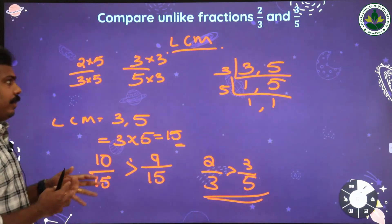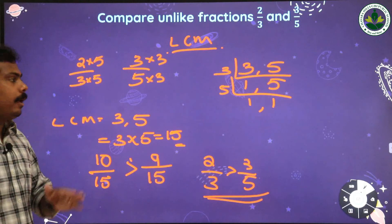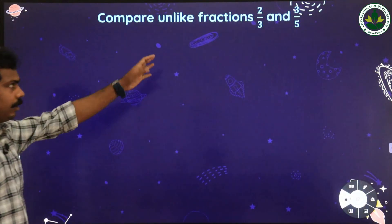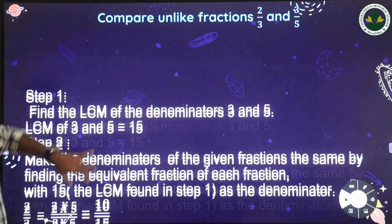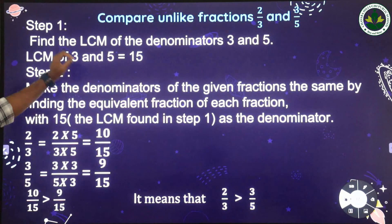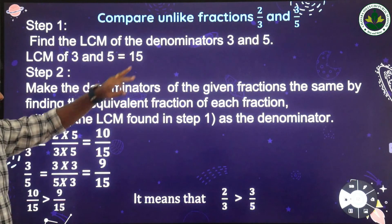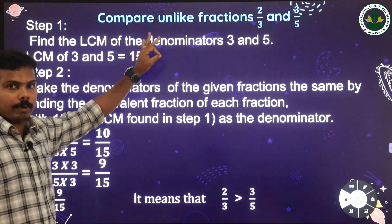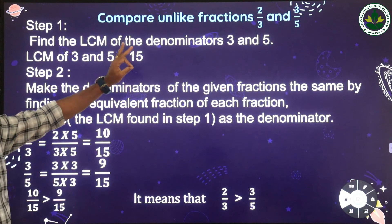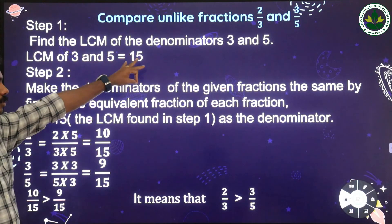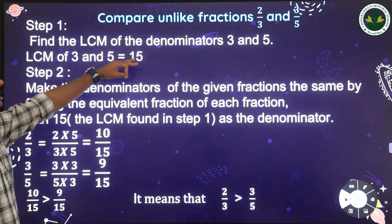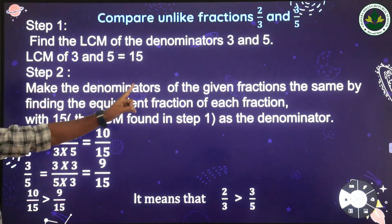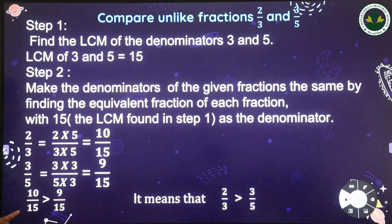Let me recap the LCM method once more. We need to compare two unlike fractions: 2 by 3 and 3 by 5. First, find the LCM of the denominators 3 and 5. Since 3 and 5 are prime numbers with no common factor other than 1, we multiply them: the LCM of 3 and 5 is 15.